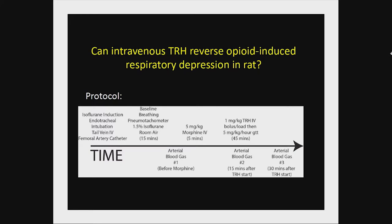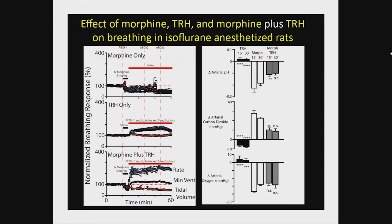We wanted to know how good TRH is at reversing opioid-induced respiratory depression. We anesthetized rats with isoflurane, intubated them, instrumented with tail vein and femoral artery catheter, and measured baseline breathing under 1.5% isoflurane. Morphine at 5 mg/kg over 5 minutes gave about a 50% decrease in ventilation. We then administered TRH at 1 mg/kg followed by a continuous infusion and drew blood gases. We found this drug works really well for reversing opioid-induced respiratory depression.